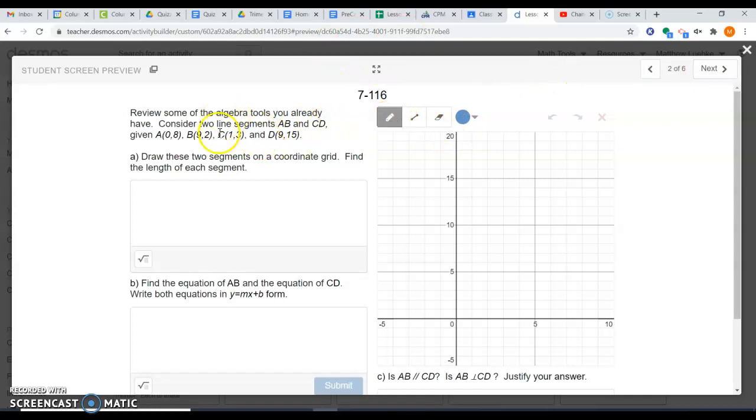We're going to plot point A and B. So we have 0, 8. You go over 0 up 8 and then you have 9 comma 2. You go over 9 up 2 and you have your line AB. We can label that AB.